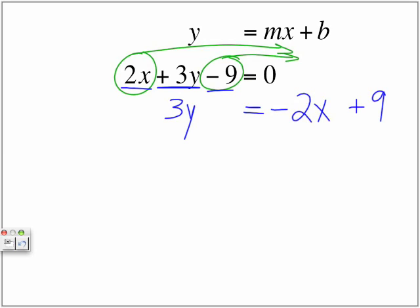Now, we have 3y equals negative 2x plus 9. We don't want this 3 value. We need to get rid of it somehow because our expression is y equals mx plus b. Not 3y or 7y or 9y, whatever number in front of y is. We want y isolated.